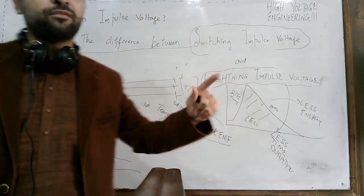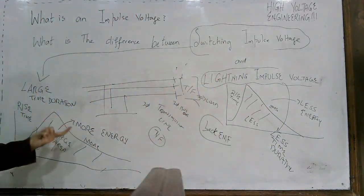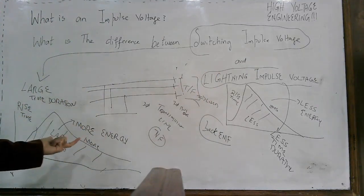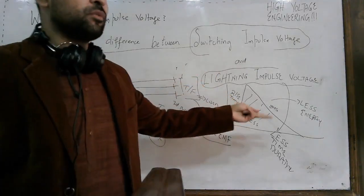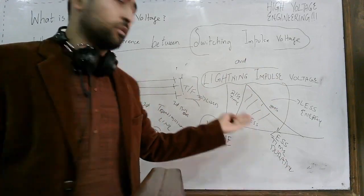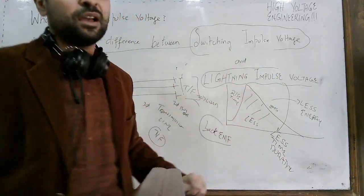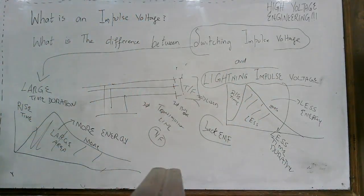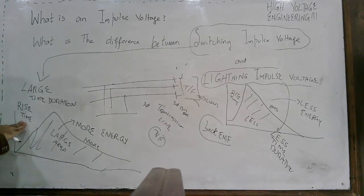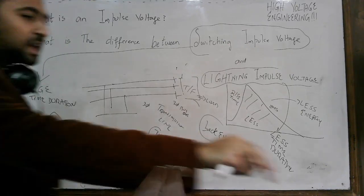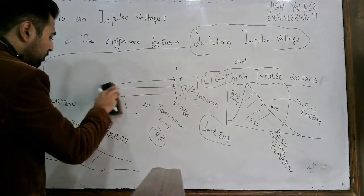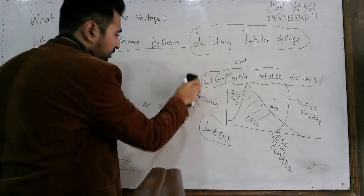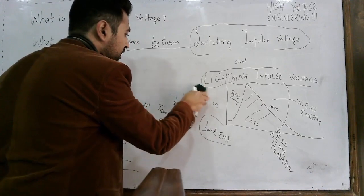When you have more energy, it is more destructive as well. Lightning impulse voltage is also destructive because it reaches its peak in a very short time. So both of them are not good for your power system. The rise time is also known as the wave front time, and the fall time is also known as the wave tail time.